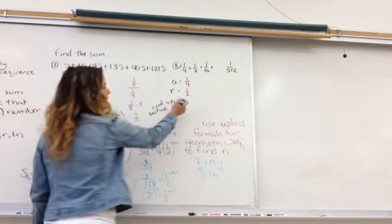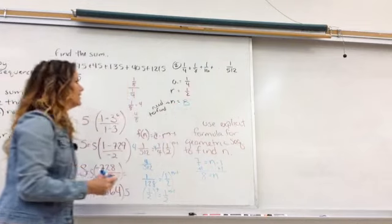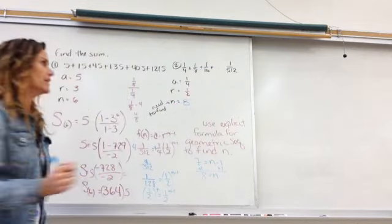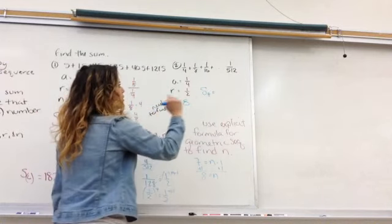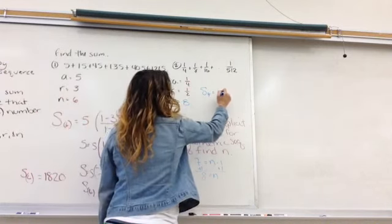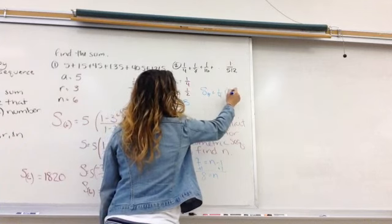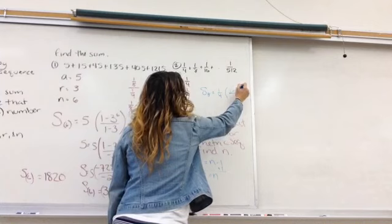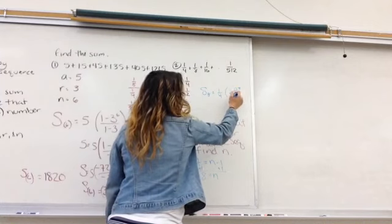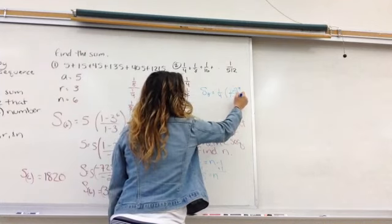So now that I know n, I'll go back here, plug that in, and I can go back to my formula for finding the sum. So s, which is the sum of the first 8 terms, is my a value, my first term, times my r value, excuse me, my 1 minus the r value to the 8th, over 1 minus the r value.